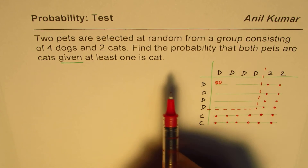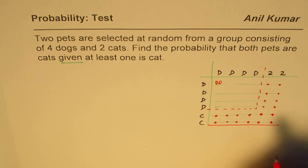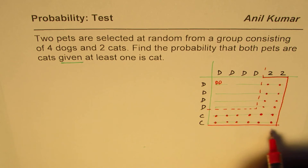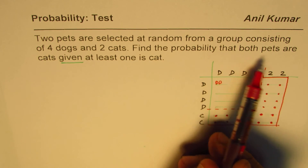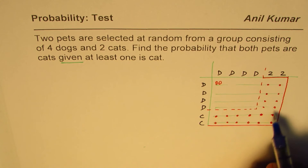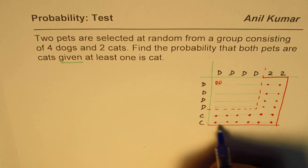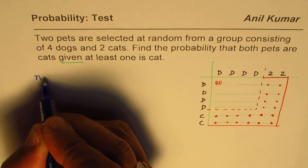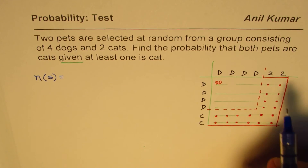Now when we are saying that at least one is a cat, we are talking about this group — at least one is a cat. Find the probability that both pets are cats — this is what we have to find. So out of this group, how many have at least one cat? Our domain basically changes to that, so this becomes our modified domain. We can write the number of elements in our modified domain — which is always the case in a conditional probability.